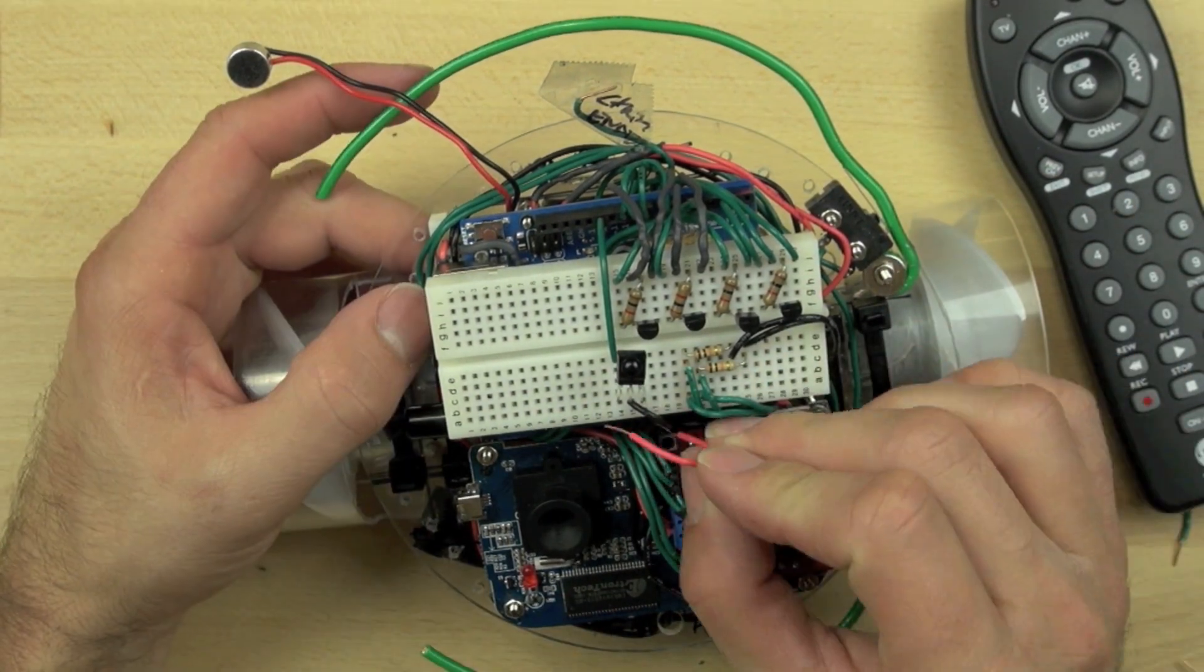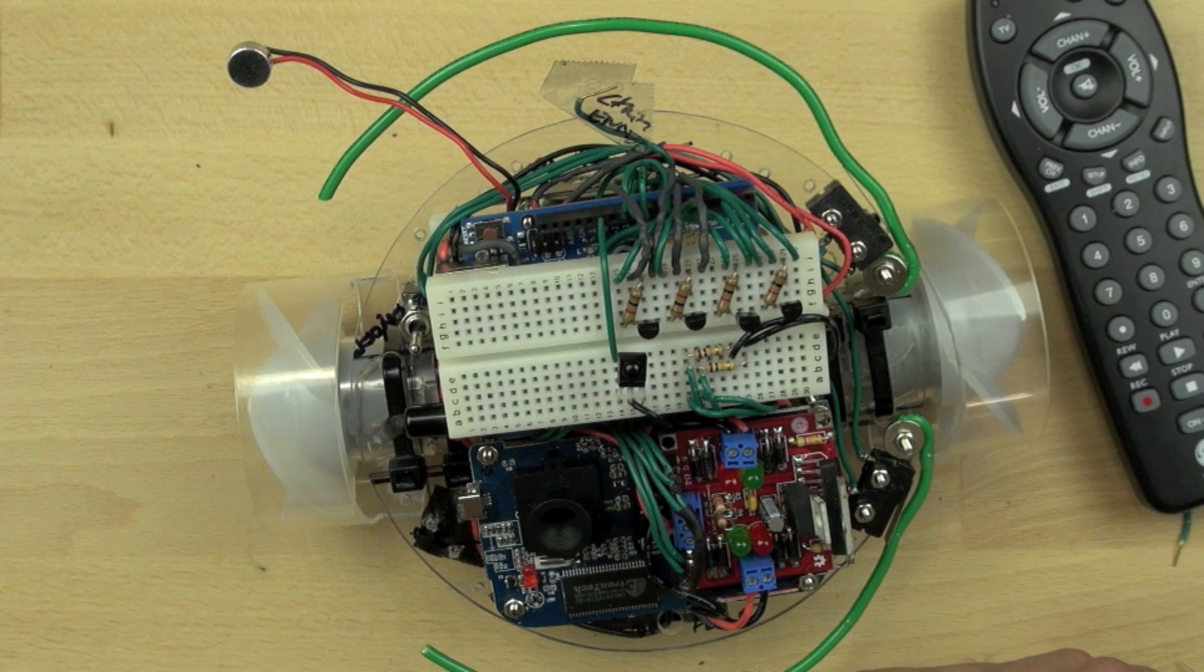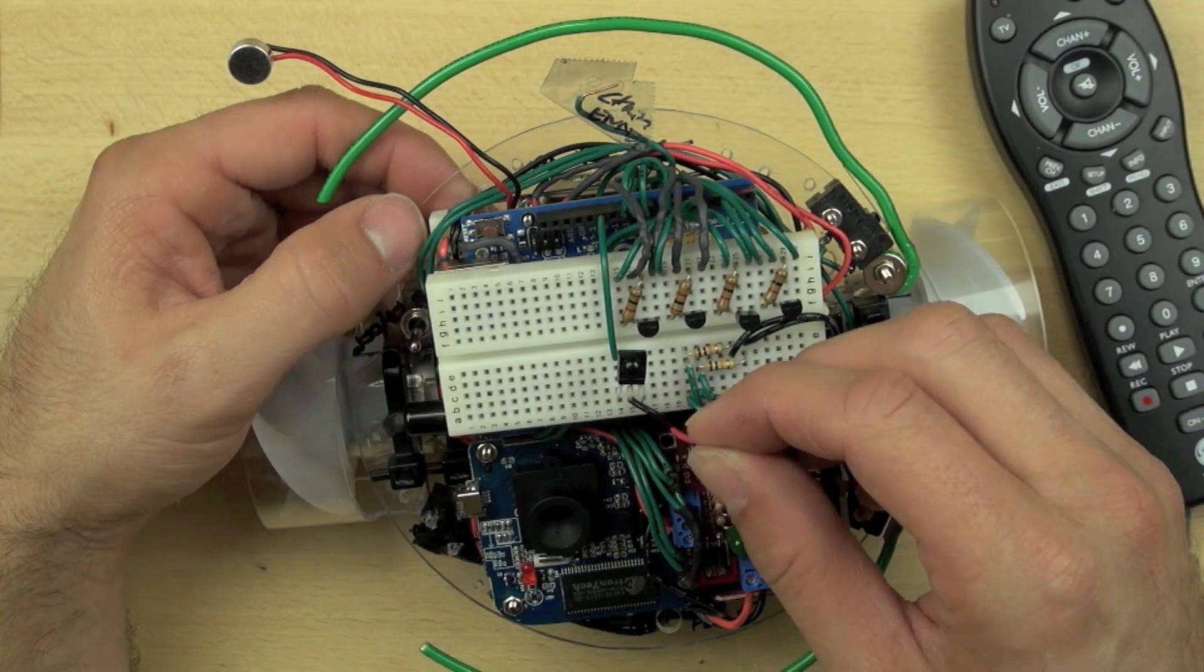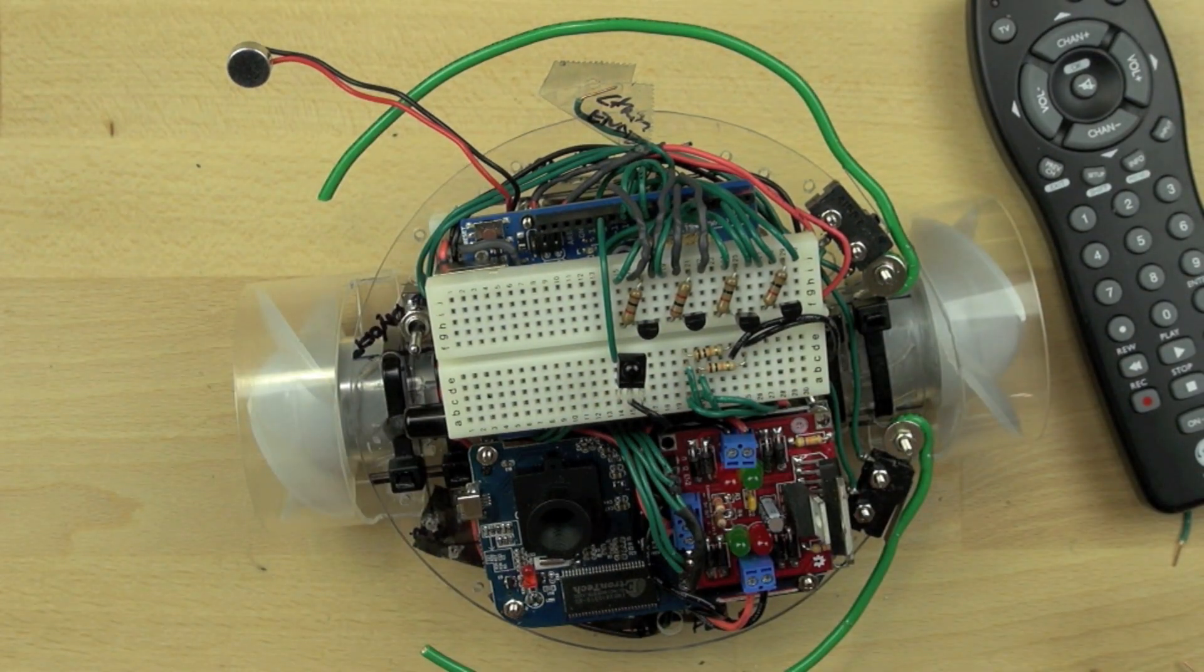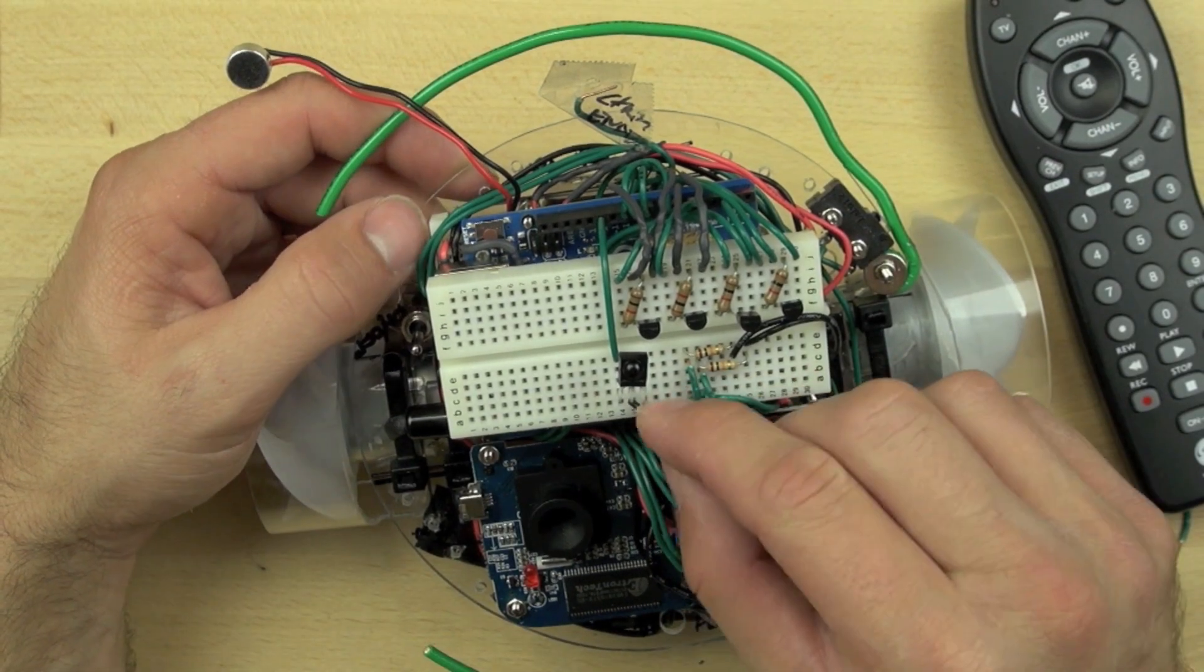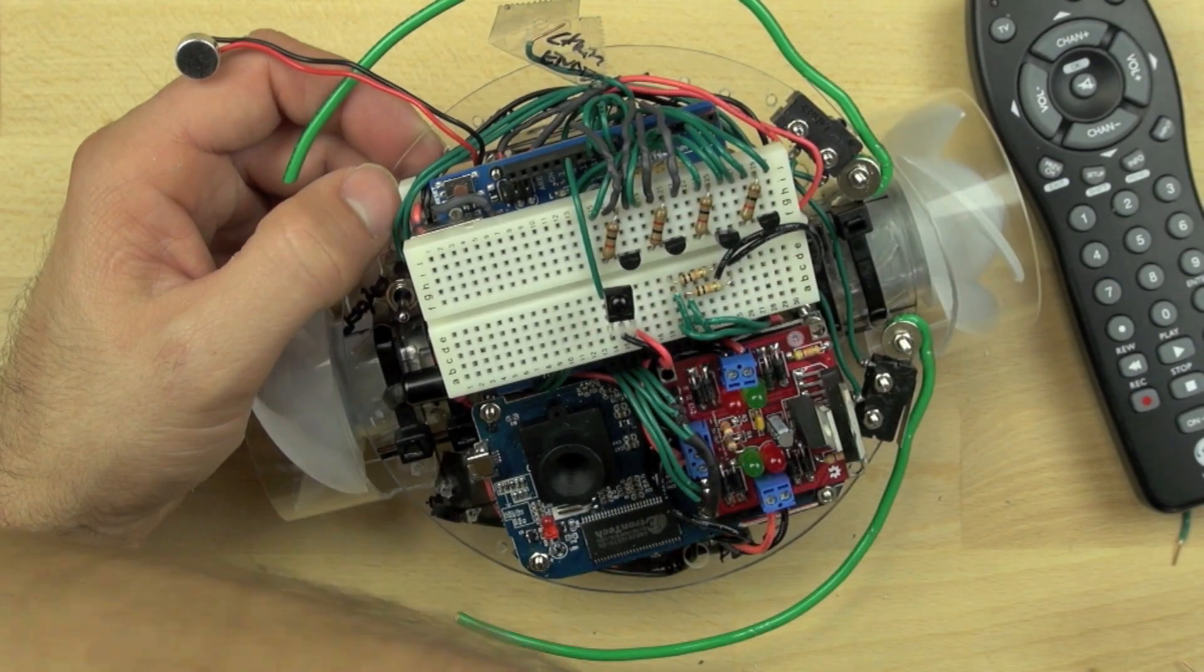There's also a 5 volt out positive, so we're going to connect that to our receiver module as well. We're connecting that to the leg on the right side of the receiver module, and again to the 5 volts out.